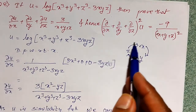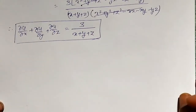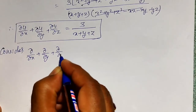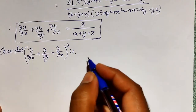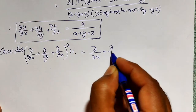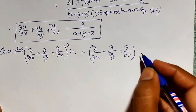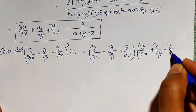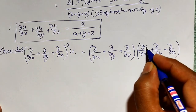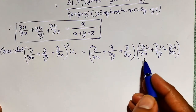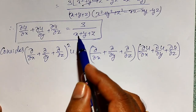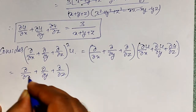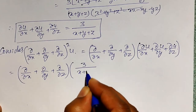Now to prove the second part, consider the LHS: (∂u/∂x plus ∂u/∂y plus ∂u/∂z) whole squared into u. This can be written as (∂u/∂x plus ∂u/∂y plus ∂u/∂z) times (∂u/∂x plus ∂u/∂y plus ∂u/∂z) into u. Writing u inside, the inner term (∂u/∂x plus ∂u/∂y plus ∂u/∂z) applied to u was already proved to equal 3 divided by (x plus y plus z). Now we apply the operator ∂/∂x plus ∂/∂y plus ∂/∂z to 3 divided by (x plus y plus z).